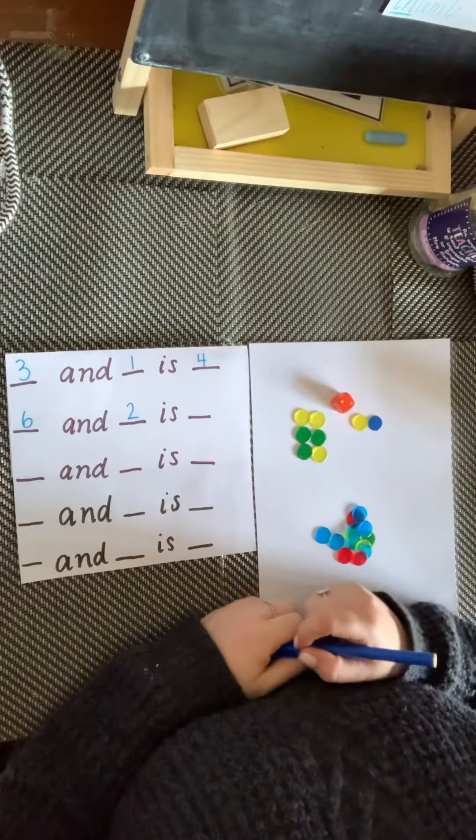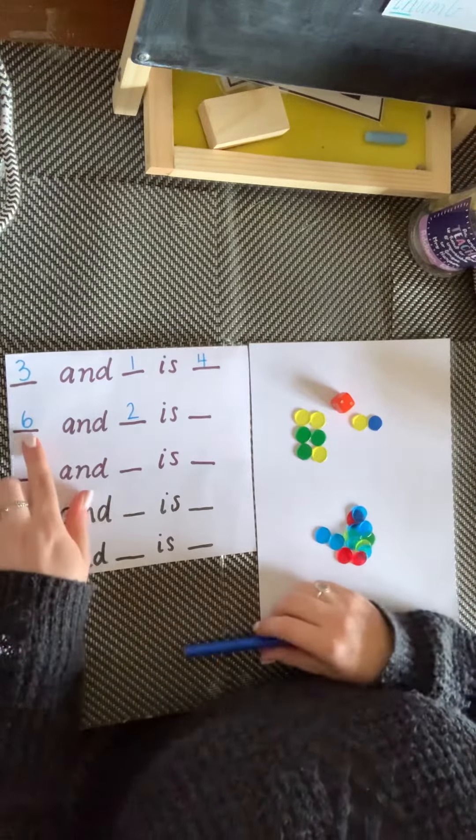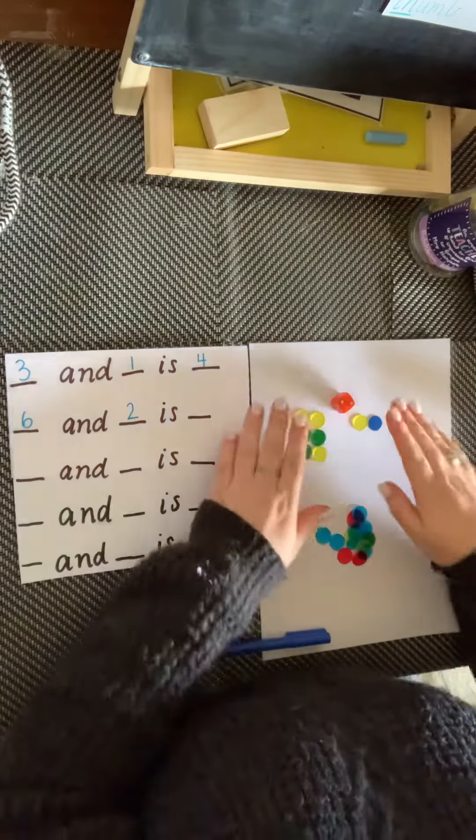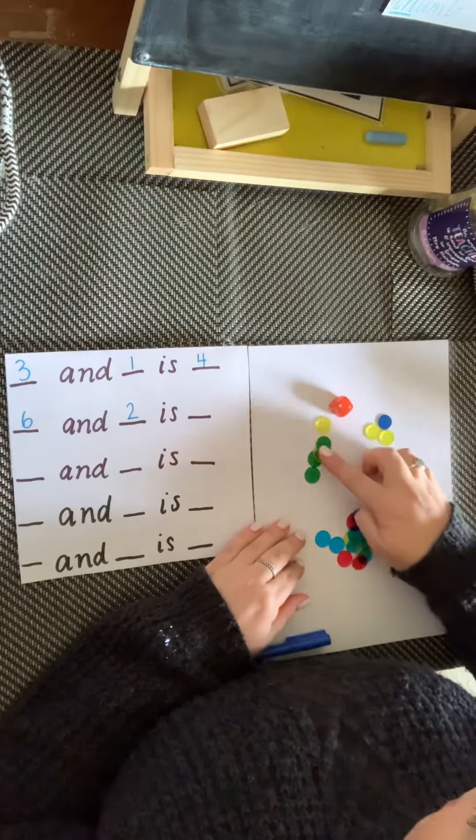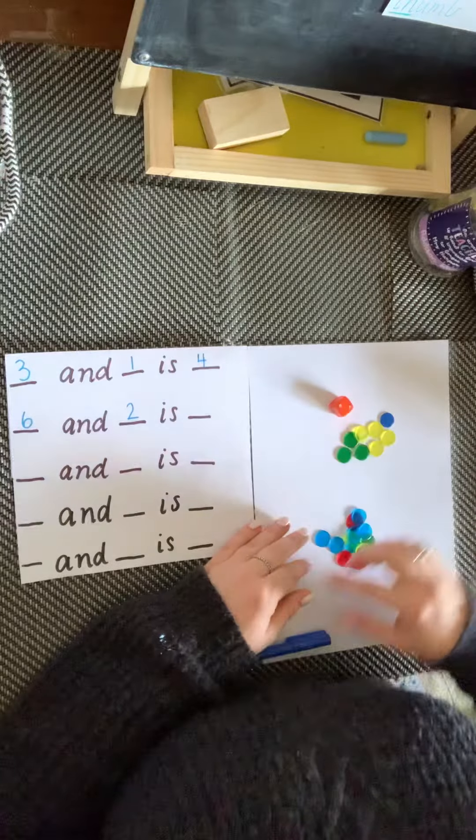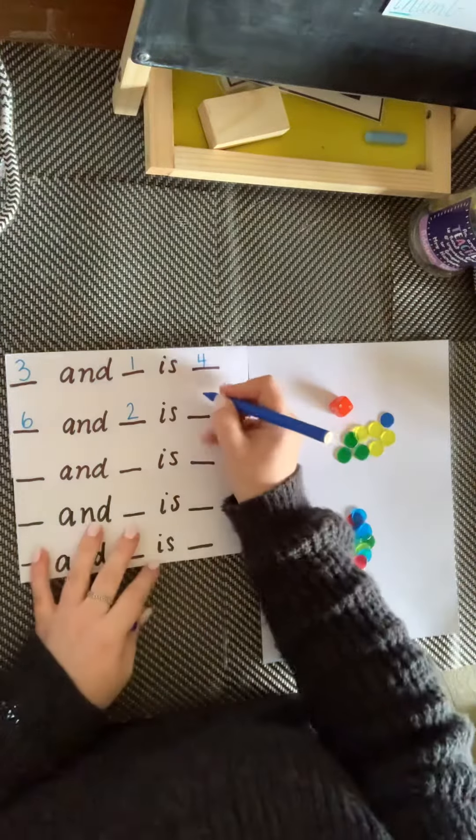And now we're going to work out how many there are altogether. Six and two is, put them together. One, two, three, four, five, six, seven, eight. We write the number eight.